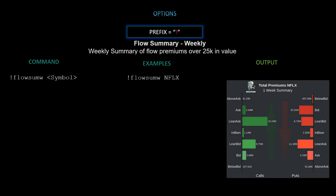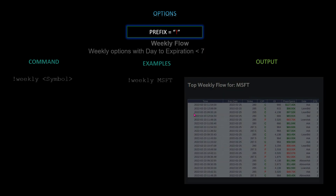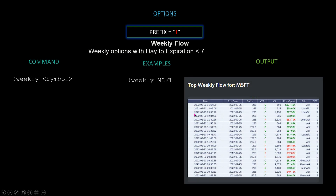Next we have flow summary weekly — same as before but a weekly summary of flow premiums over $25,000 in value. The command is `!flowsumw [symbol]`. Using Netflix as an example, you get the same look as the daily view, just a weekly consolidated version. We also have weekly flow — weekly options with days to expiration less than seven — command is `!weekly [symbol]`. Using Microsoft, you can see the top weekly flow right here.